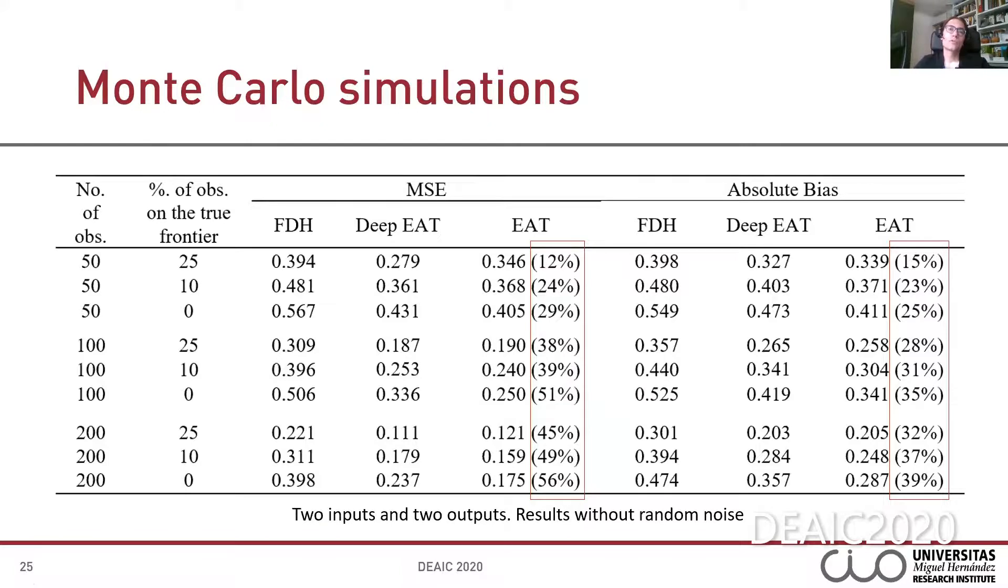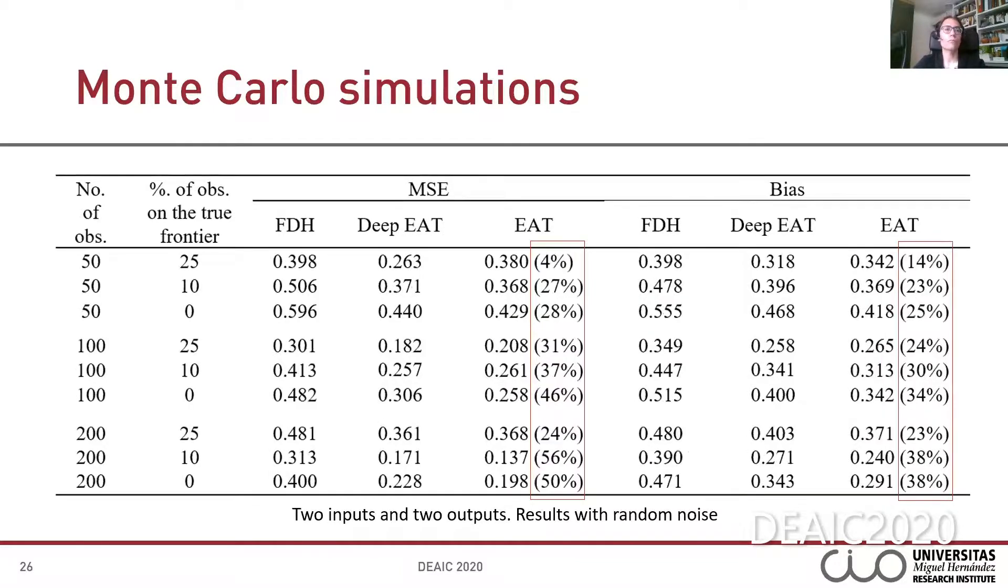We also simulated a multi-output scenario with two inputs and two outputs. The next two tables show the results associated with this scenario. The structure of these tables is similar to the previous table except for the fact that we now consider the percentage of DMUs on the two frontiers and the possibility of random noise. Again, we observed that the EAT technique, the new approach, outperforms FDH with respect to the mean square error and the bias, with and without random noise.